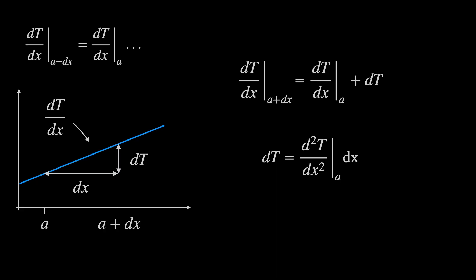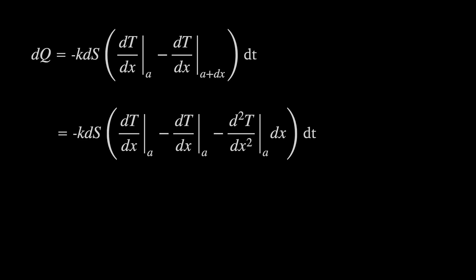So finally, we have dT by dx at x equals a plus dx is the derivative of T at a plus the second derivative of T at a multiplied by dx. If you know Taylor series, you might recognize this as the first order Taylor expansion. This is an important step because if we put that back into the equation for dQ, we find that the dT by dx terms cancel. And so we're left with k times d²T by dx² times dS times dx times dt.